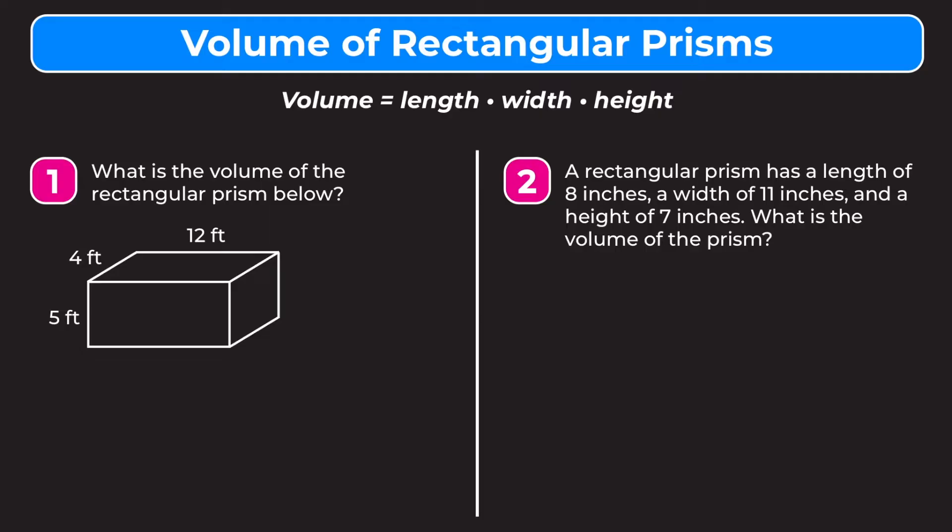To find the volume of a rectangular prism you just need to remember one formula and that is volume equals length times width times height. If you remember that and you're given the length and the width and the height you can figure out the volume of any rectangular prism.